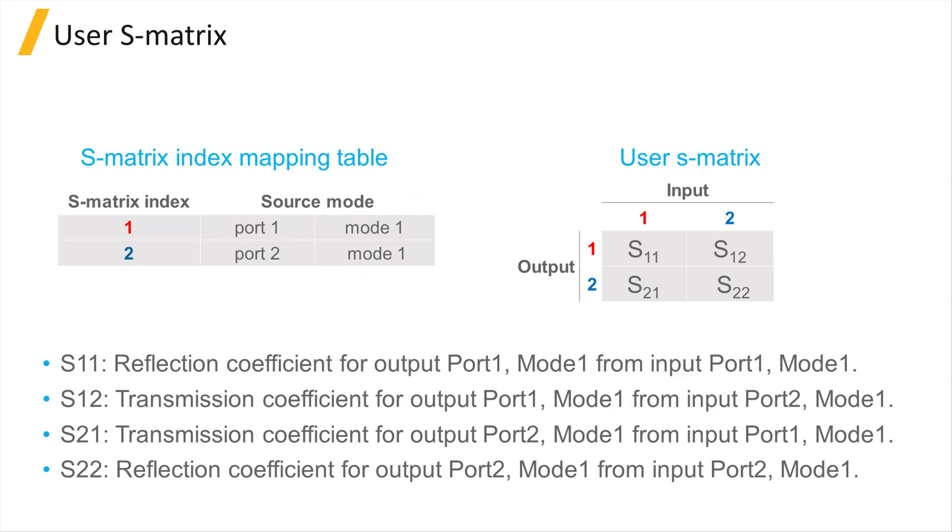So you have two S-Matrix indices, 1 and 2. The resulting user S-Matrix has a size of 2 by 2, with the first index of the subscript corresponding to the output and the second to the input. So S11 is the complex reflection coefficient for output port 1 mode 1 from input port 1 mode 1.